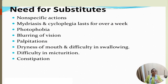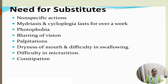The need for atropine substitutes arises because atropine is non-specific in action, causing undesirable effects such as mydriasis, cycloplegia lasting more than one week, photophobia, blurring of vision, palpitation, dryness of mouth, difficulty in swallowing, difficulty in micturition, and constipation. Therefore, specific drugs are available for specific indications.